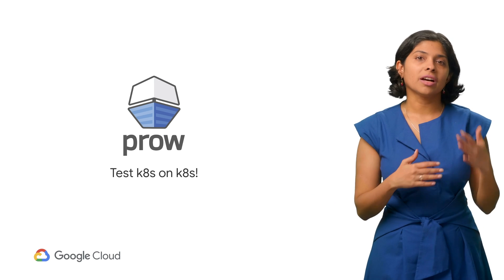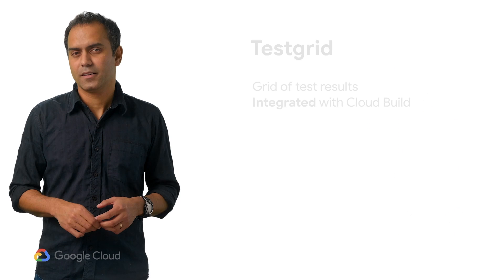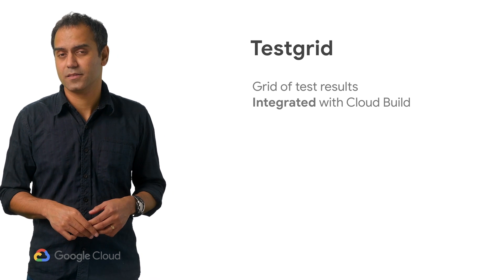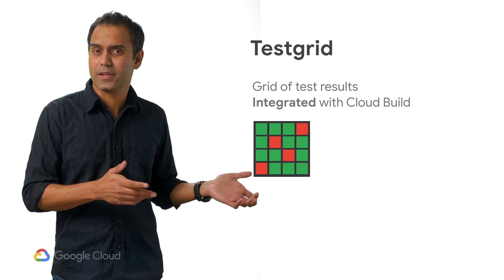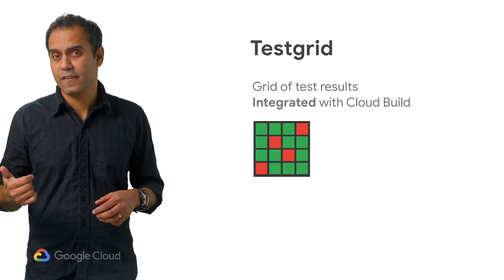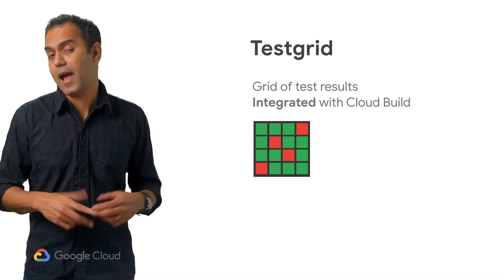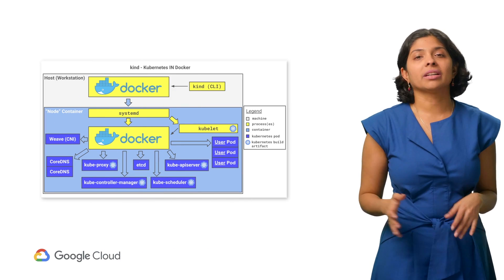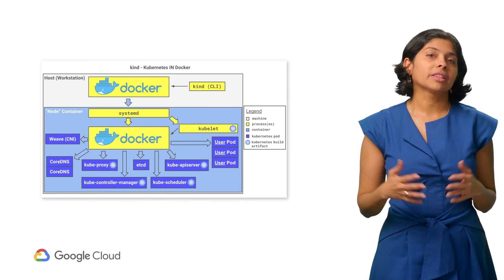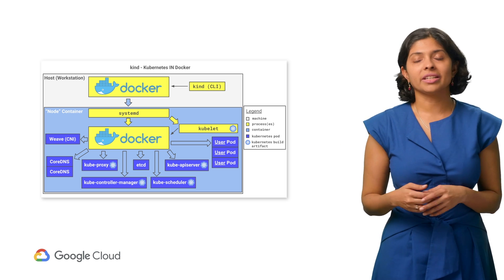Prow is built on top of Kubernetes, so our CI helps test Kubernetes on Kubernetes. Test Grid provides a grid of test results, making it easy to see patterns over time. It provides fast access and allows interactive sorting, filtering, grouping, and more. It is highly configurable and integrated with Cloud Build. Recently, we helped build hermetic testing using Kubernetes in Docker. Kind brings up a conformant Kubernetes cluster locally without any external dependencies for testing Kubernetes changes or integration testing Kubernetes applications.